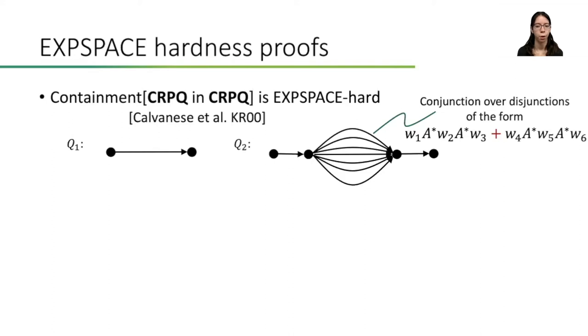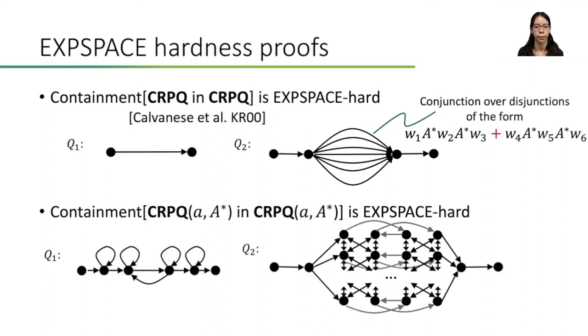We tried very long to rewrite Q2 in a suitable form, but finally, we found that we also had to rewrite Q1 to make it work. Using cycles in both Q1 and Q2, we can simulate disjunctions in a non-trivial manner. I won't go into details here, but if you are interested, you can find them in our paper.